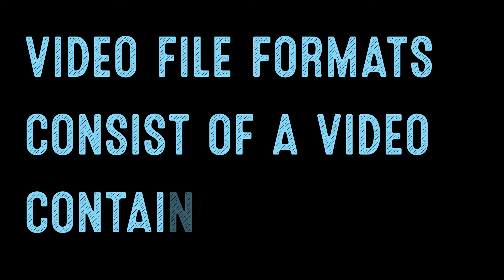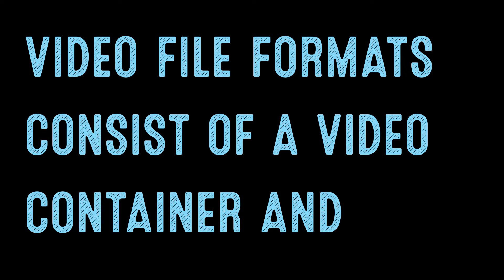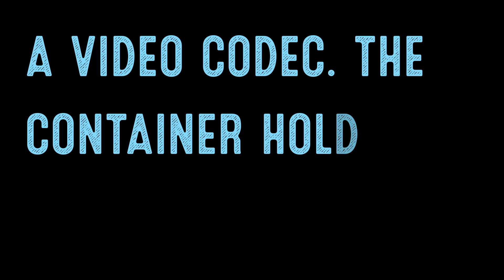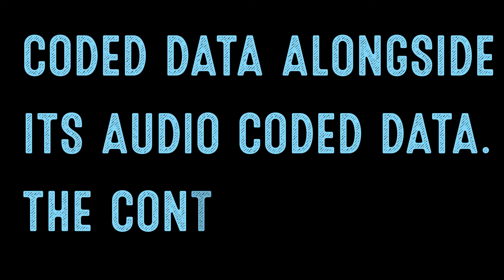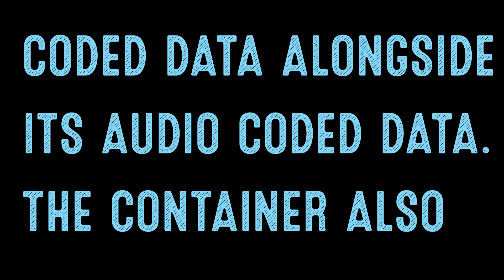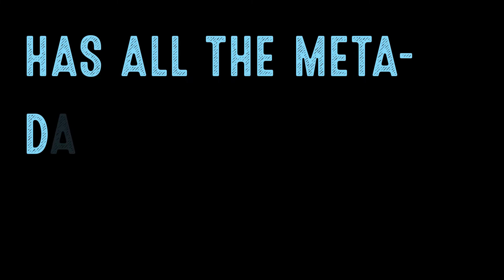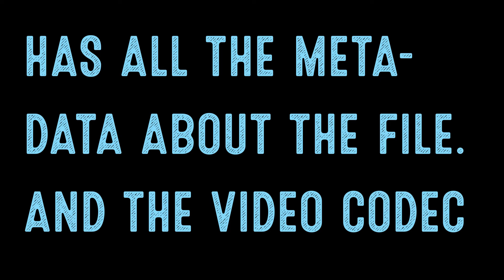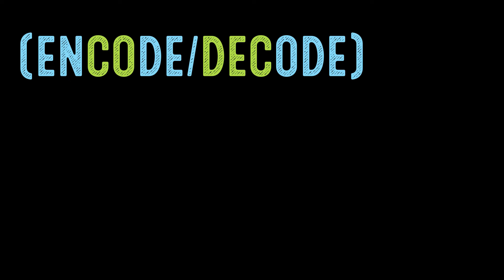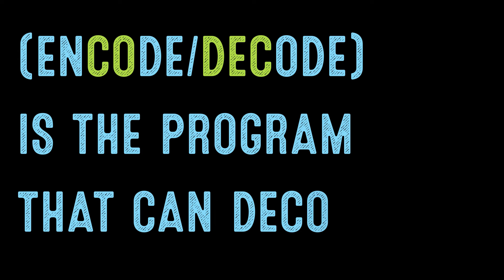Video file formats consist of a video container and a video codec. The container holds the compressed video coded data alongside its audio coded data, and also has all the metadata about the file. The video codec — which comes from encode/decode — is the program that can decode the compressed data.